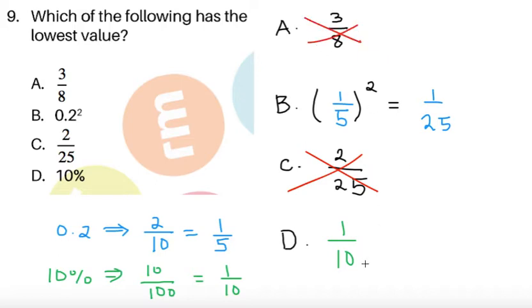Now, D has a denominator of 10, so 1 tenth is going to be greater than 1 over 25 for sure. So just by cancellation, we can conclude that answer B is the correct answer.